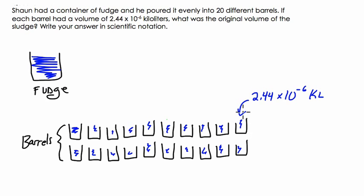So how do we do it? Well, you could take the volume of one barrel and add it 20 times to go back to the original, or you could just say, what is 2.44, the volume of one barrel, times 20?